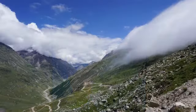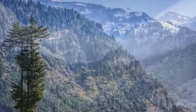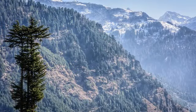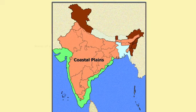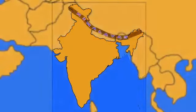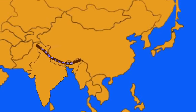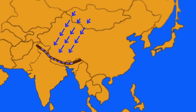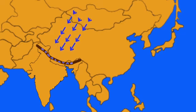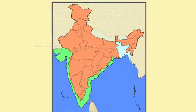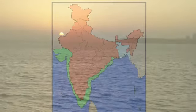The Himalayas have an average height of about 6000 metres, whereas the coastal plains have a maximum elevation of about 30 metres. The Himalayas prevent the cold winds from Central Asia from entering the subcontinent, which is why this subcontinent experiences comparatively milder winters compared to Central Asia. The coastal plains, on the other hand, create a moderating influence on the climate because of the sea breeze and the land breeze.